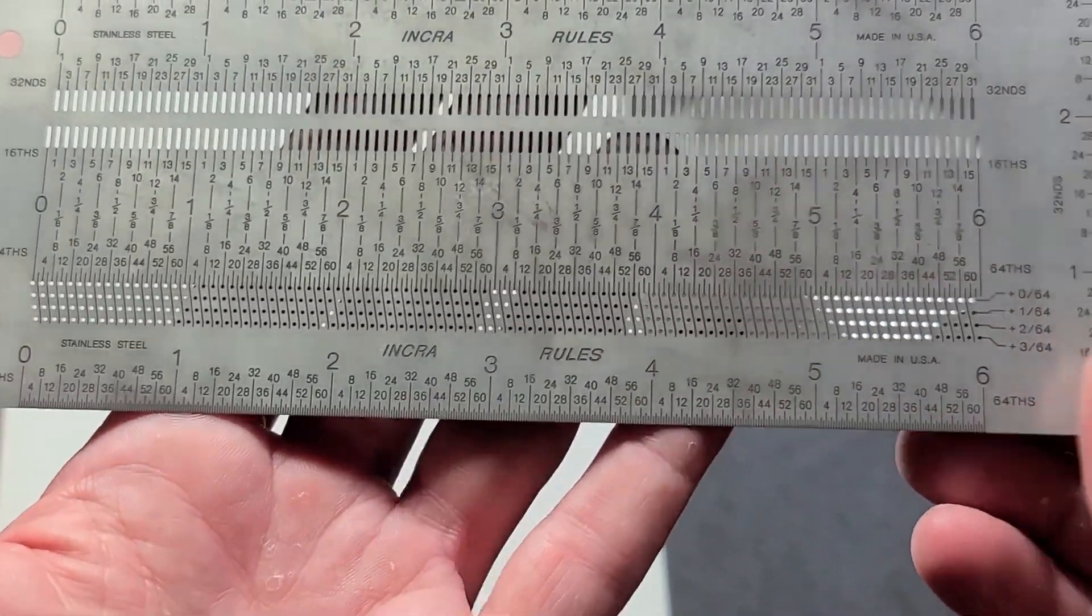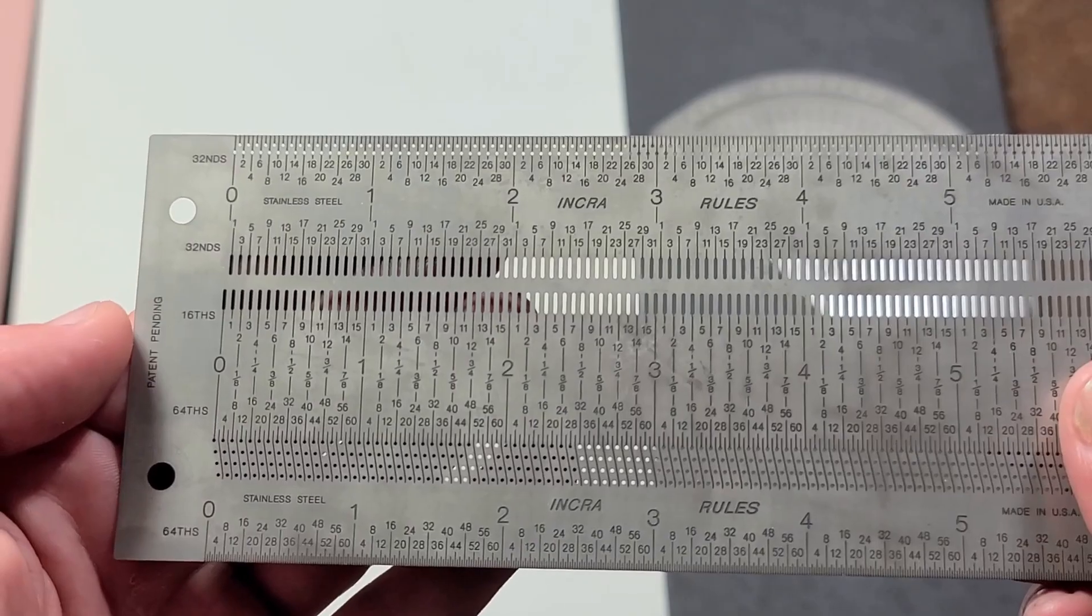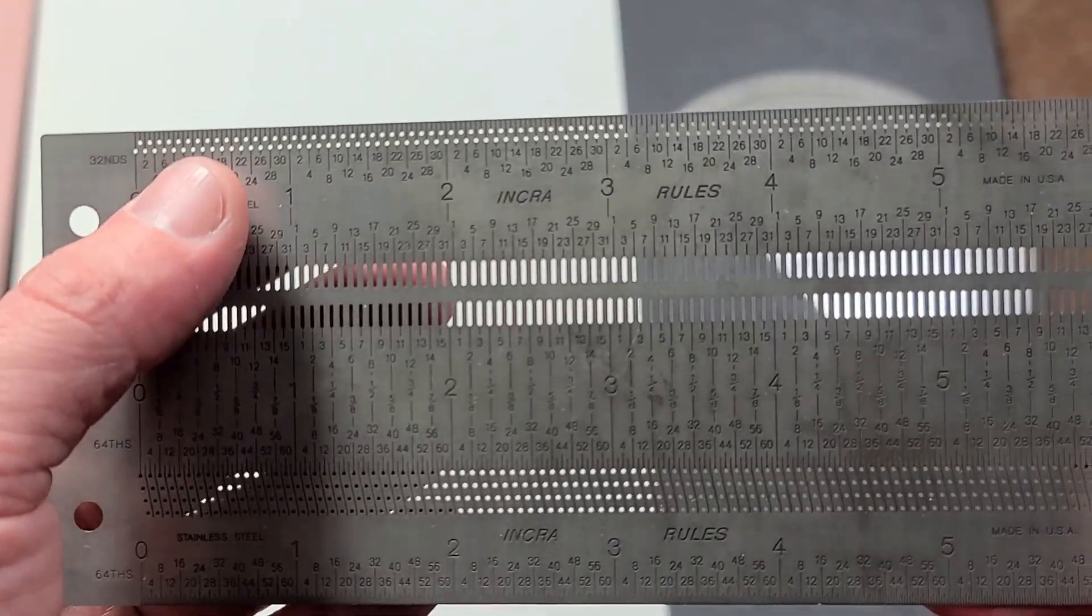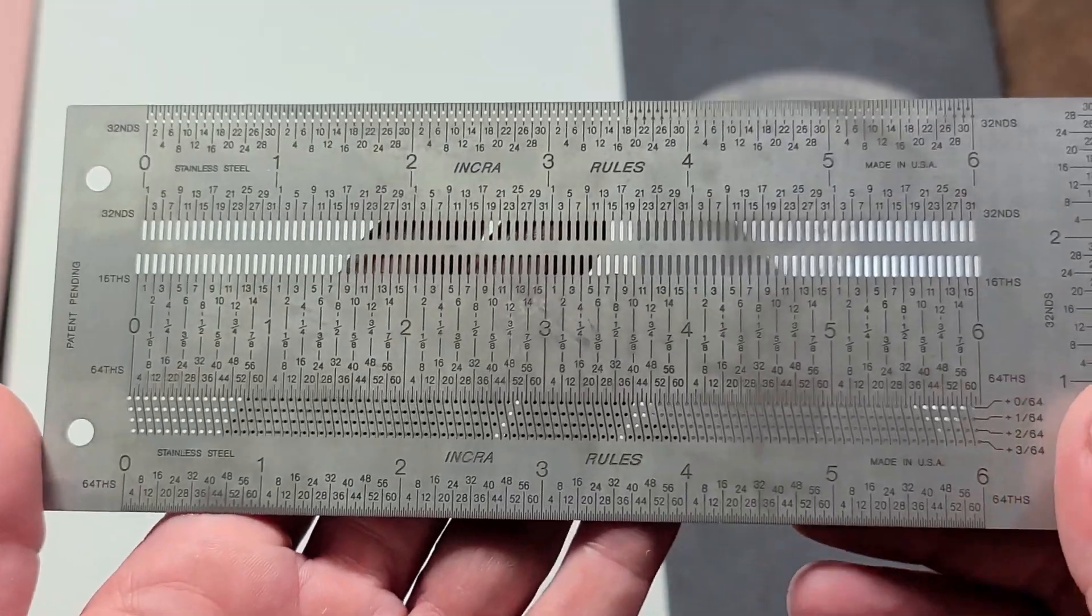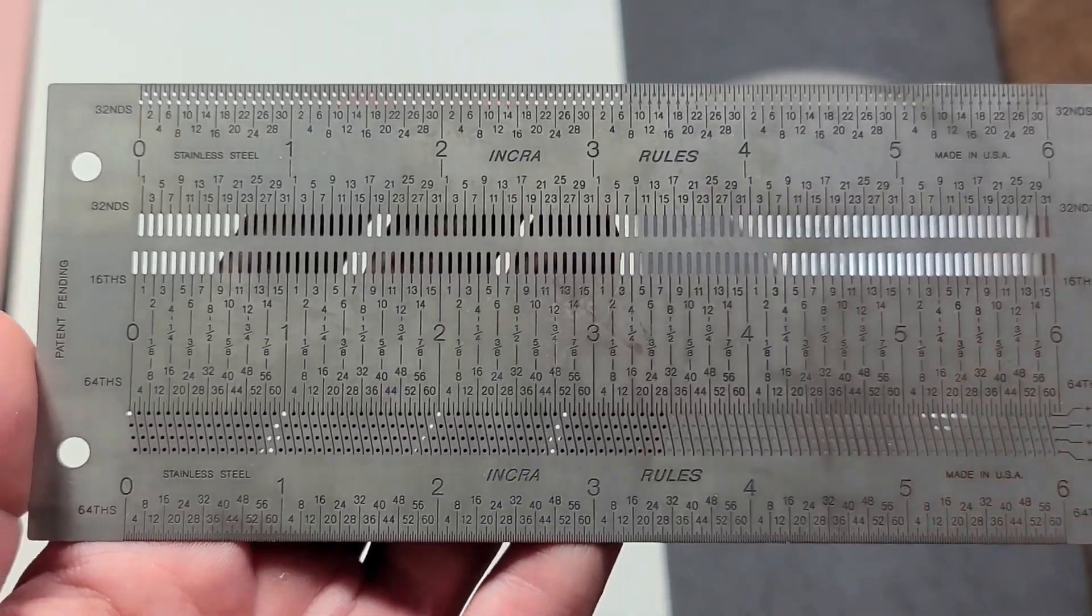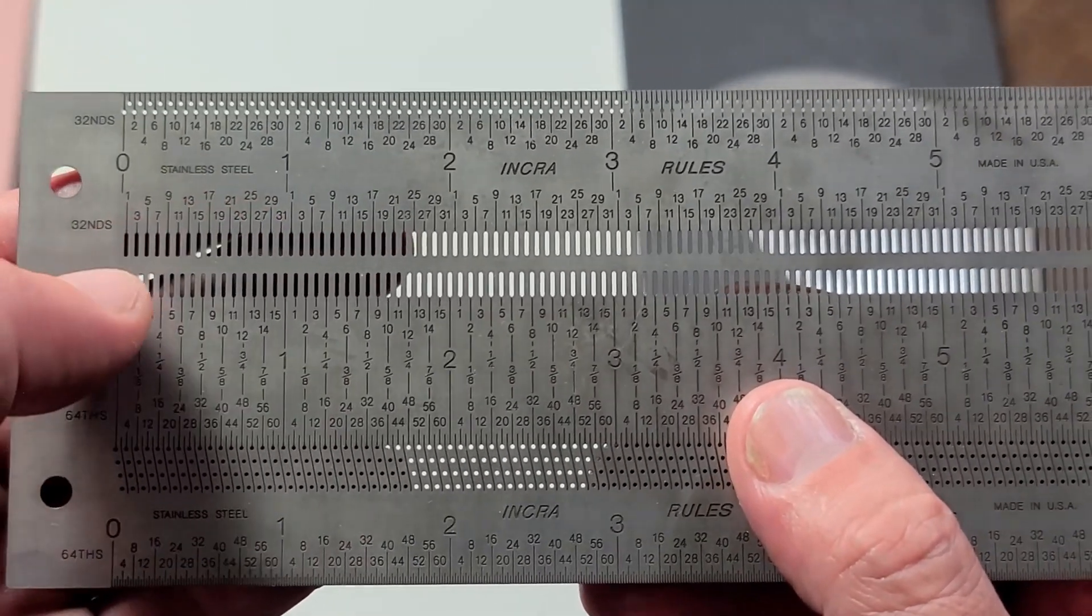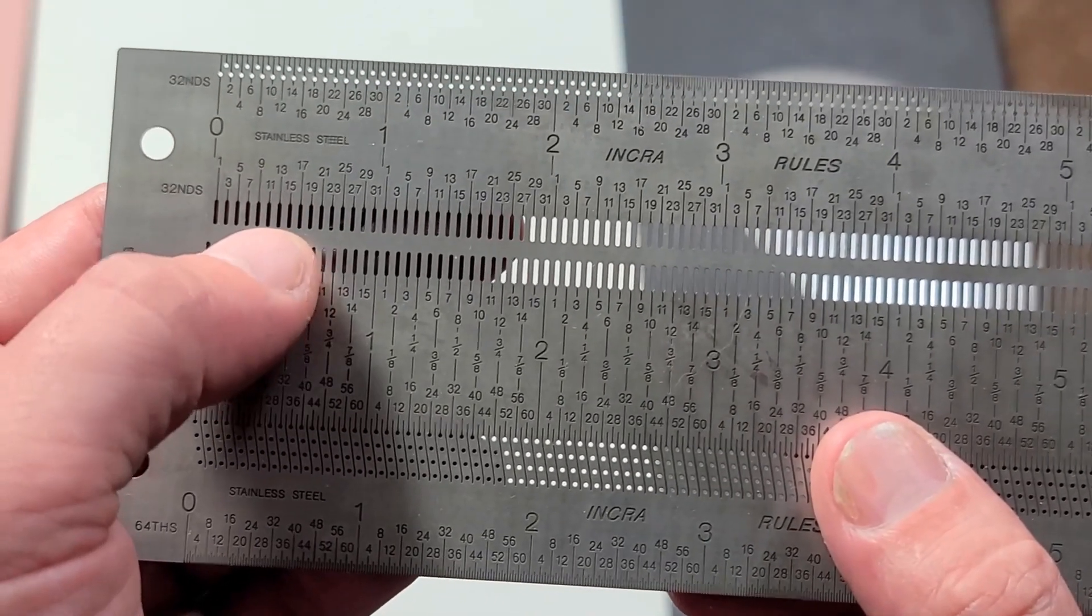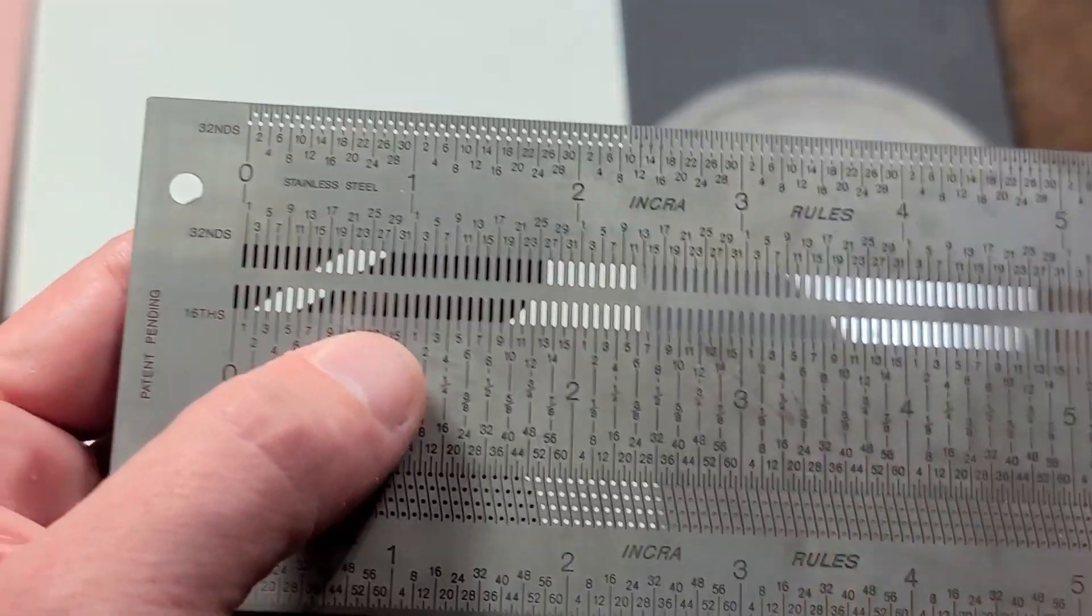Anyway, the deal with these is that you use them as any kind of normal ruler. They have 64ths here, they have 30 seconds, 16ths somewhere on here. What it does is it gives you a whole bunch of marking slots and holes at each one of those specific points so you can do very accurate work, whether it's artwork, drafting. I could certainly see these being used in the machine shop.